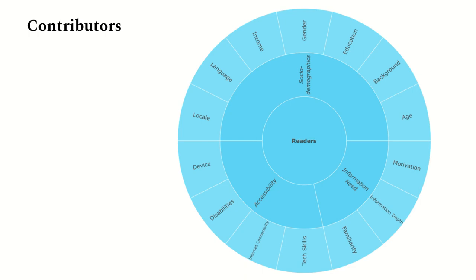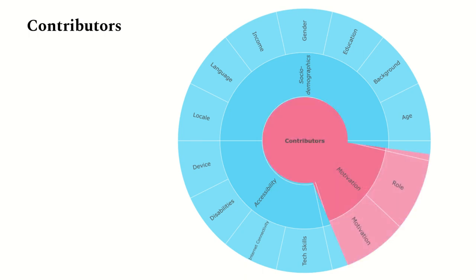This concludes the readership gaps. Next, we'll talk about the contributors dimension, which is fairly similar to the readers taxonomy. There is a sociodemographic phase set where gaps reflect different levels of contributorship depending on sociodemographic characteristics, and an accessibility phase set. Instead of the information needs phase set, we have a motivation phase set. Gaps in the motivation phase set reflect different volumes of contributorship depending on the type of work editors come to do — differing based on an editor's role and motivation.